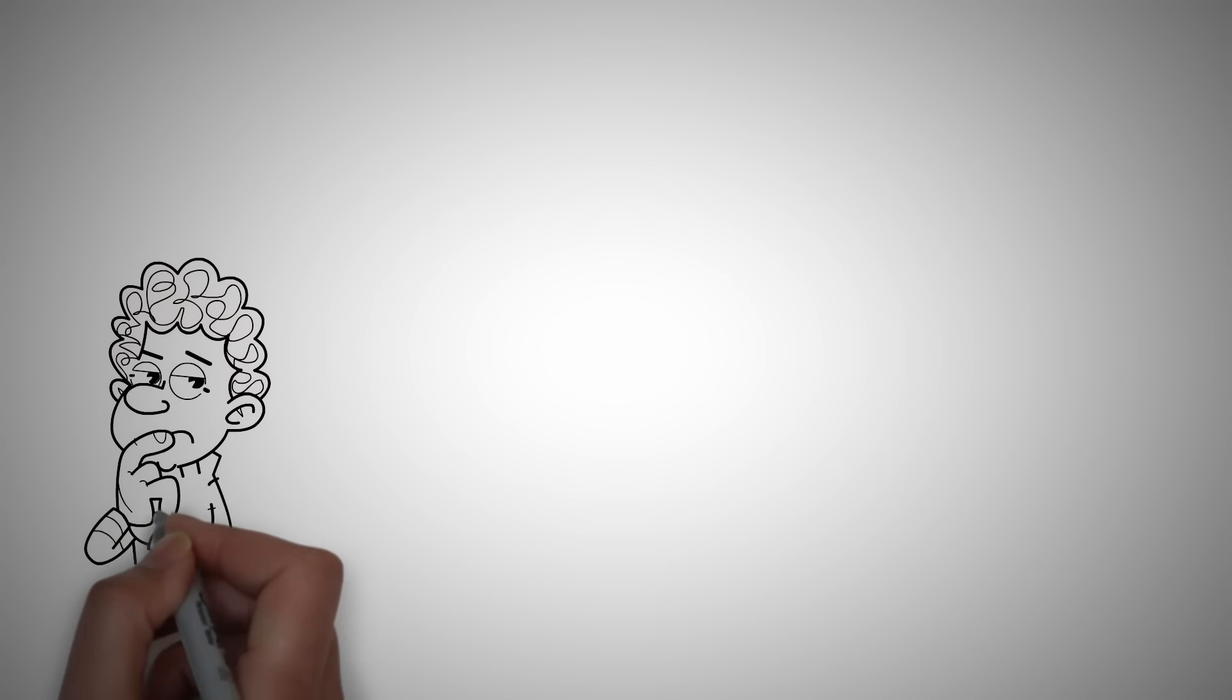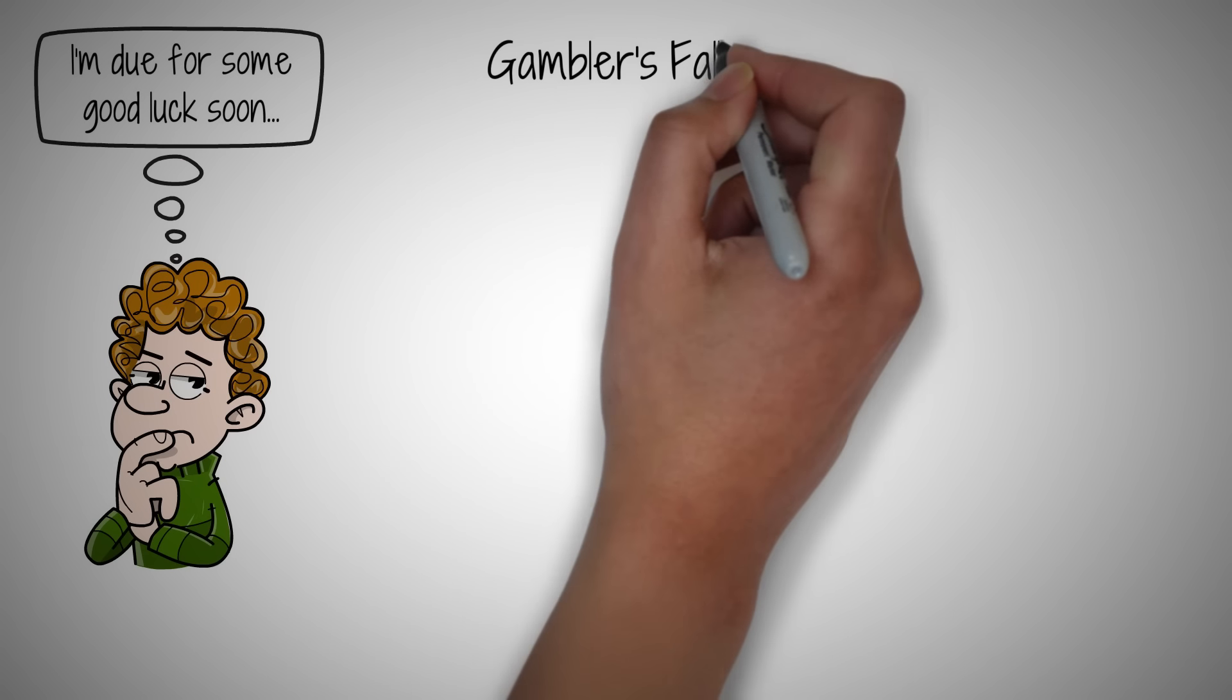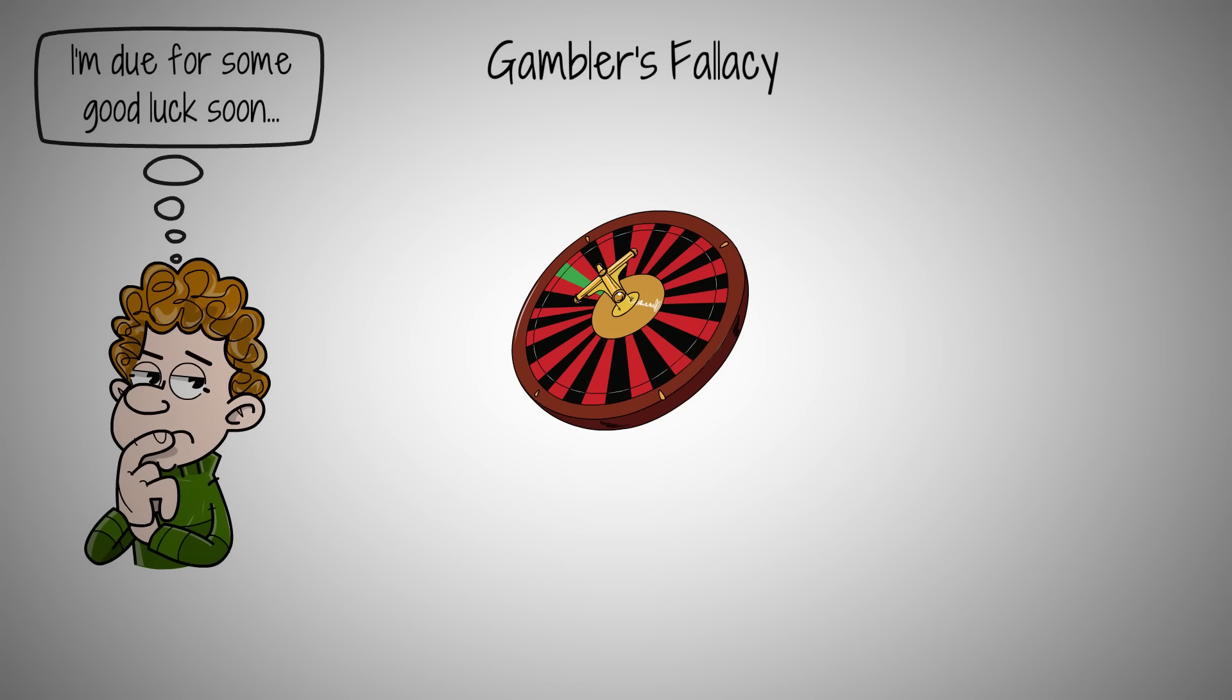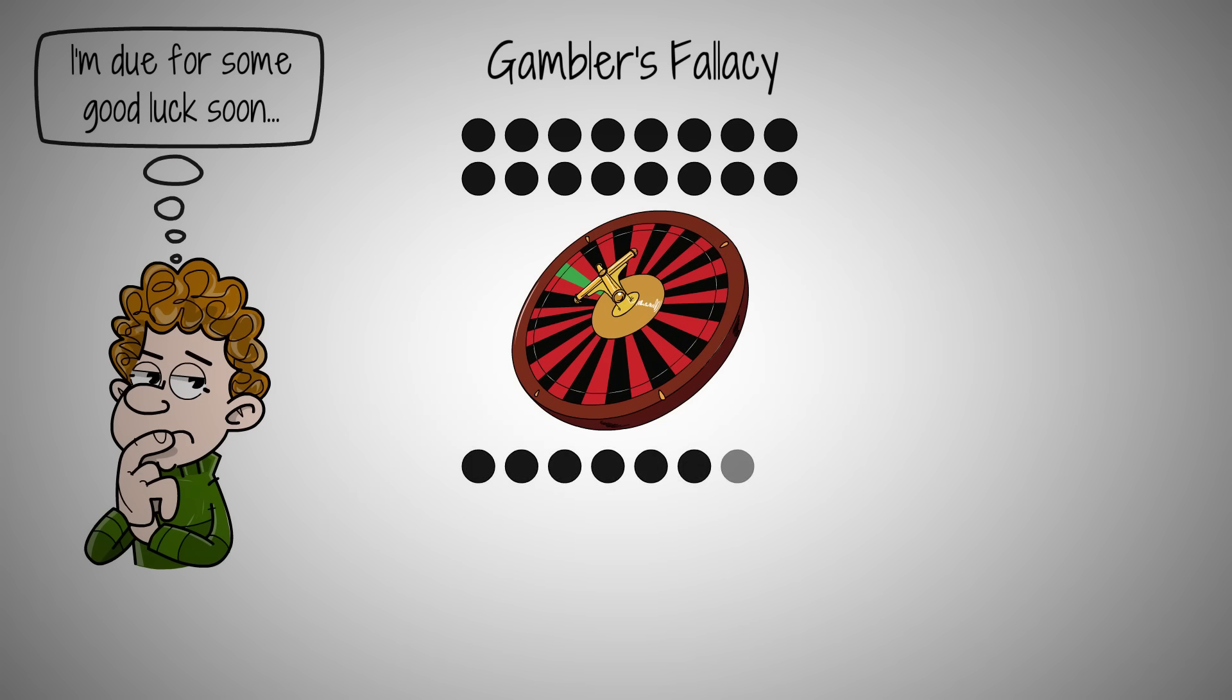Have you ever found yourself thinking, I've been unlucky so many times in a row, so I'm due for some good luck soon. This belief is known as the gambler's fallacy, and overcoming it will change your approach to risk and decision-making. In 1913, at the Monte Carlo Casino, something extraordinary happened. The roulette wheel landed on black 26 times in a row. Gamblers lost millions betting against black, convinced that a red was due next.